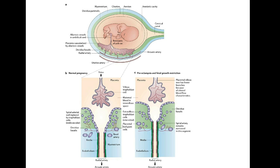Looking at the spiral artery, it becomes narrowed in preeclampsia. Because of abnormal perfusion in the placenta, this promotes further downstream effects.